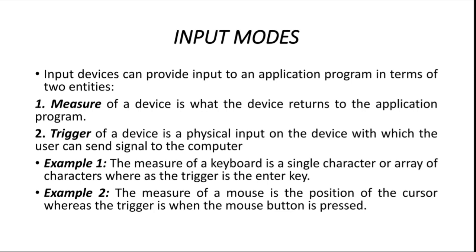When you press the enter key, the computer understands that an input has been given. Not only the enter key — when you press any key on the keyboard, a trigger occurs, sending a signal to the computer. For the mouse, the measure is the position of the cursor, measured in 2D — X direction and Y direction. The trigger for the mouse is the click, that is the button press.